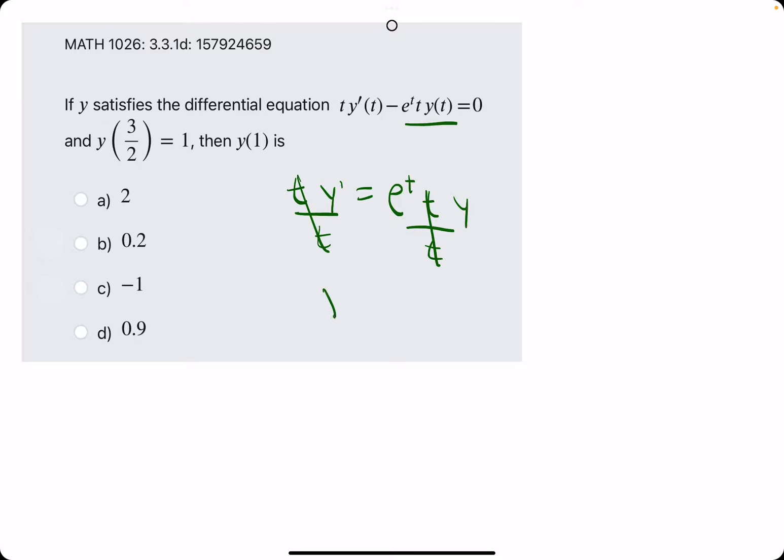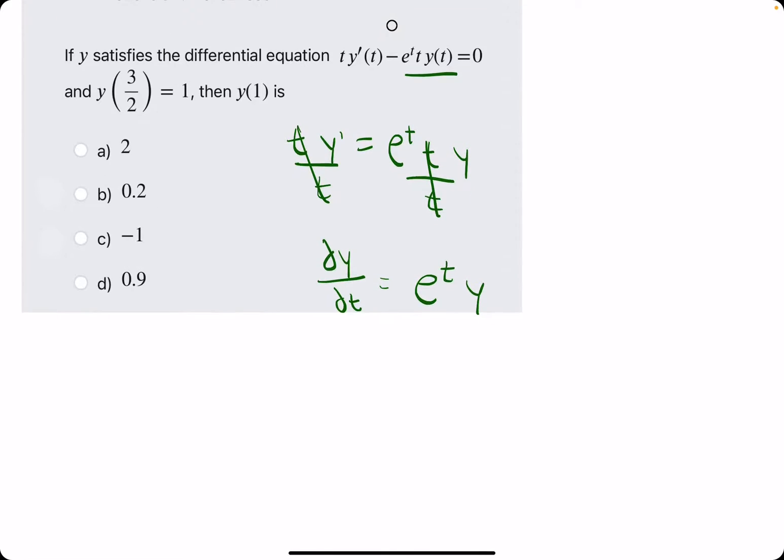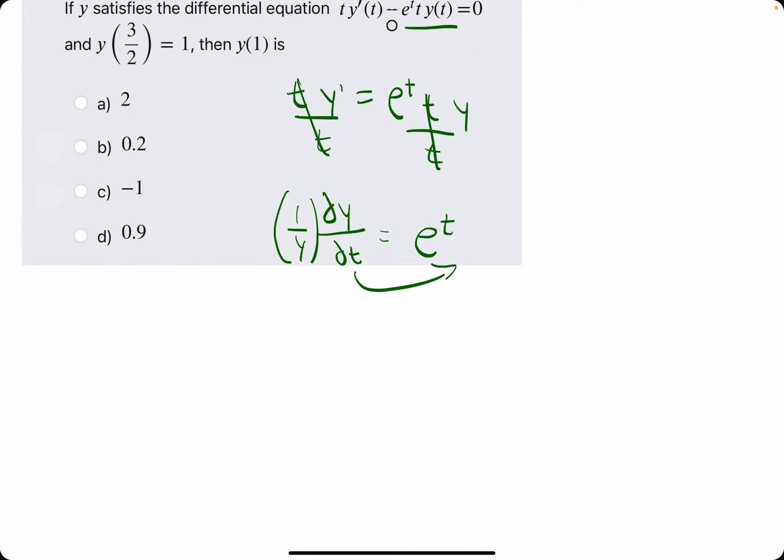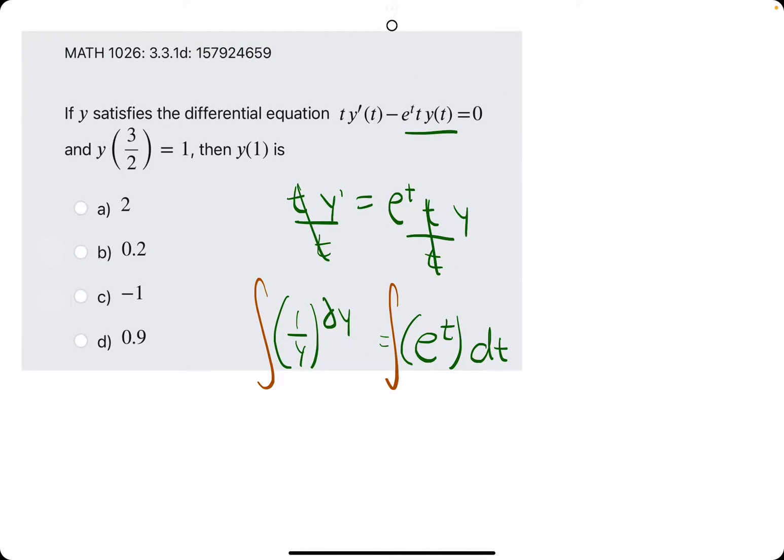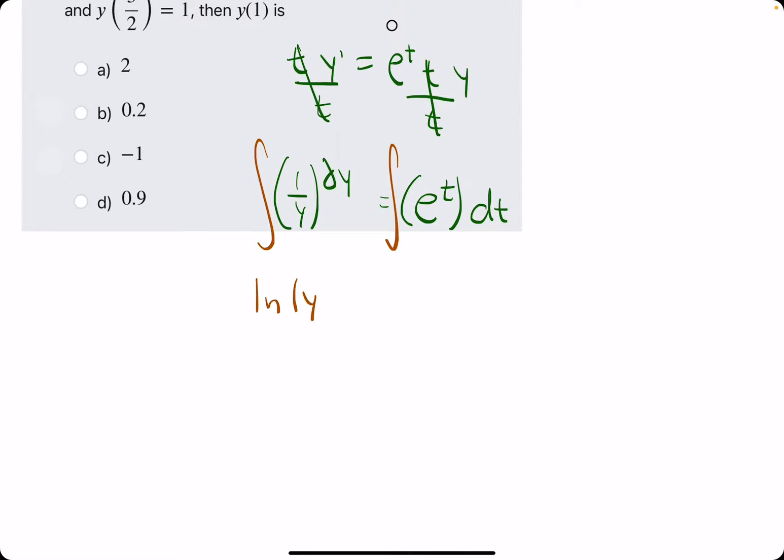And we will be left with y prime, or dy over dt, equals e to the t times y. We'll go ahead and multiply by 1 over y on both sides in order to cancel the y that was here on the right side. And we'll go ahead and multiply the dt to the right side. So we have successfully separated the variables on left and right sides of the equation. Now we want to integrate both sides, giving us natural log of absolute value of y. And then the integral, the anti-derivative of e to the t, is just e to the t. And then we add plus c.